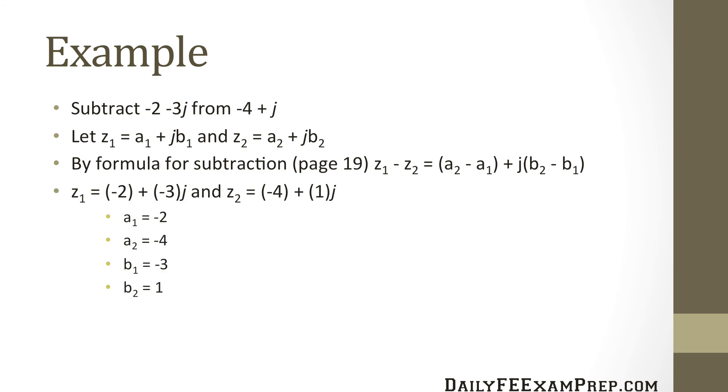So what we get is z1 equals minus 2 plus minus 3j and z2 equals minus 4 plus 1j. So our a and b values are given below: a1 equals minus 2, a2 equals minus 4, b1 equals minus 3, and b2 equals 1.